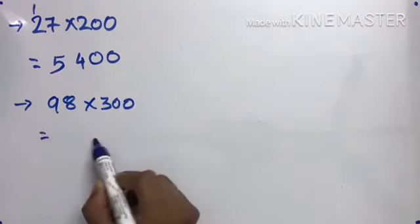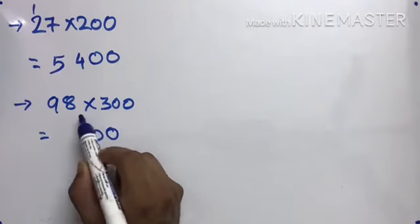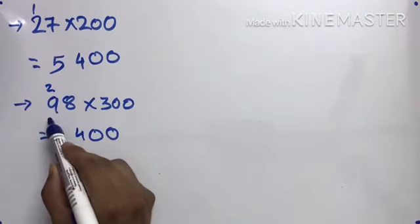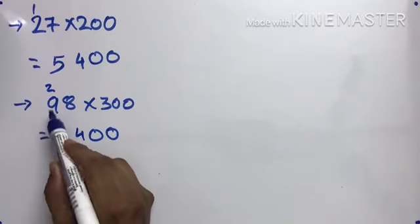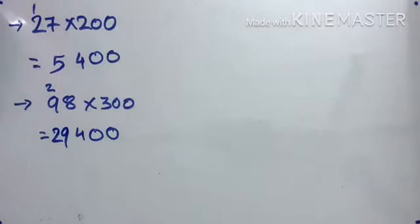98 times 300. So 300 means two zeros. 3 times 8 is 24, carry 2. 3 times 9 is 27 plus 2 is 29. 29,400. Right?